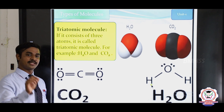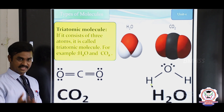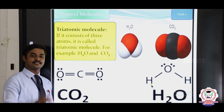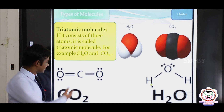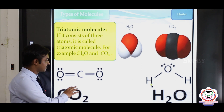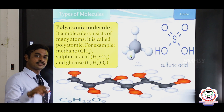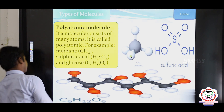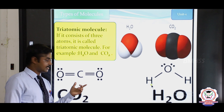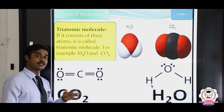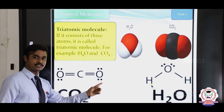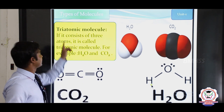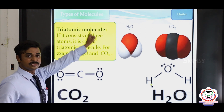How do we reference the number 3 in chemistry? Tri. So the triatomic molecule contains 3 numbers of atoms, which may be different or the same. For example, carbon dioxide CO2 has 2 oxygen atoms and 1 carbon atom — the number of atoms is 3, so it is a triatomic molecule. We only consider the number of atoms, not the type. So any molecule with 3 atoms is called a triatomic molecule.